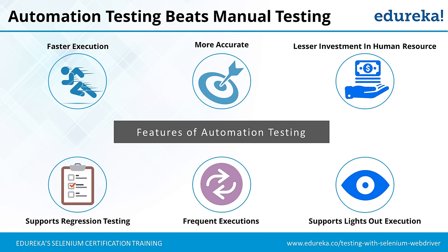Lesser investment in human resources: a manual testing team needs a minimum of four people, and you'll have to hire or redirect them, investing money. With automation, you need only one or two resources to create that test suite. Running it doesn't require special expertise — that person just needs to know a few steps to run it. So obviously there's less investment in human resources, saving on money and time.